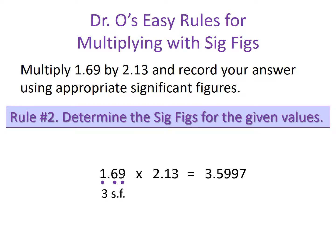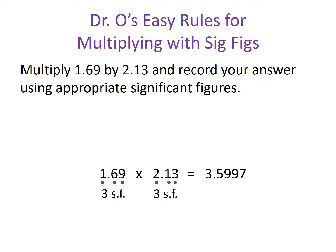Looking at the other given value, 2.13, here too we have no leading zeros or trailing zeros. Just like our first given value, the two, the one, and the three all count towards our significant figures, which means 2.13 has three significant figures as well. And with that, we're done with rule number two.